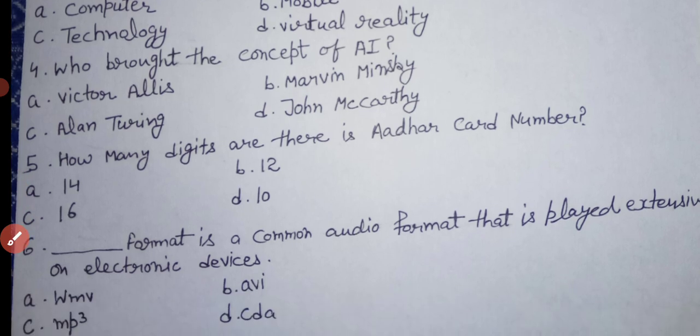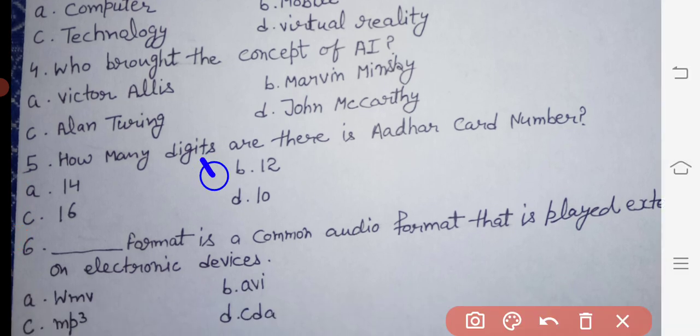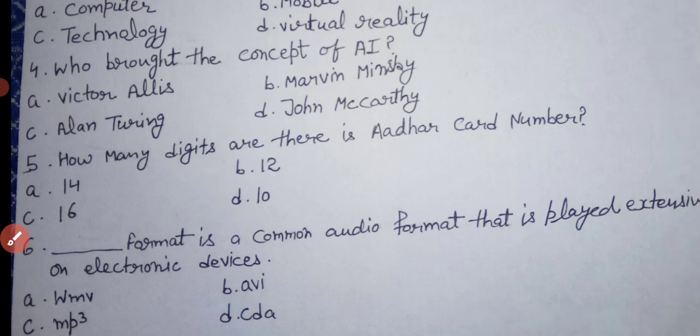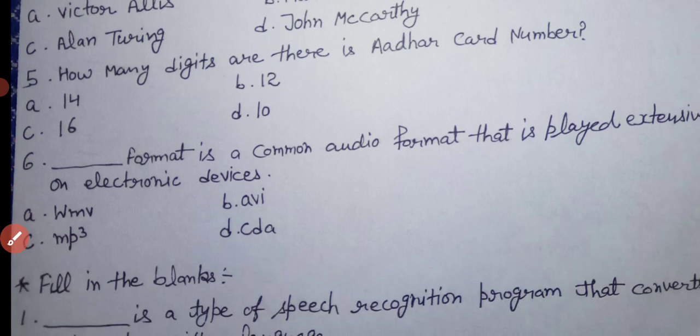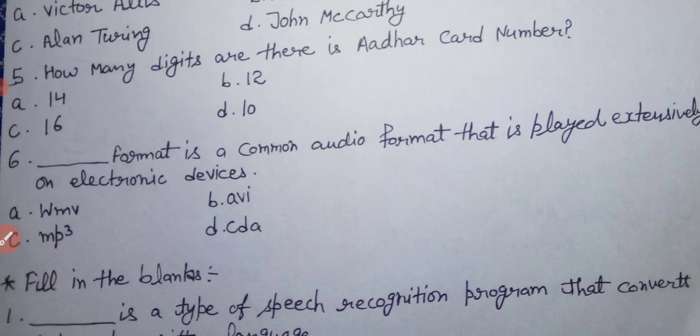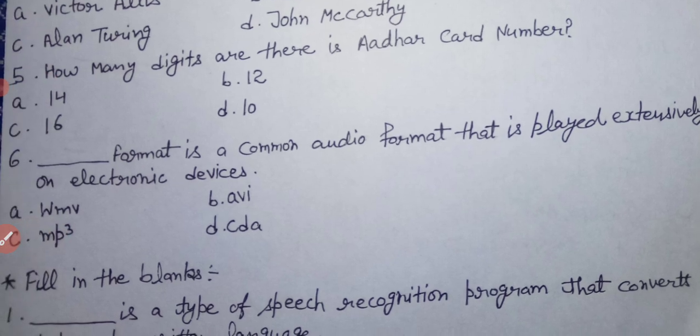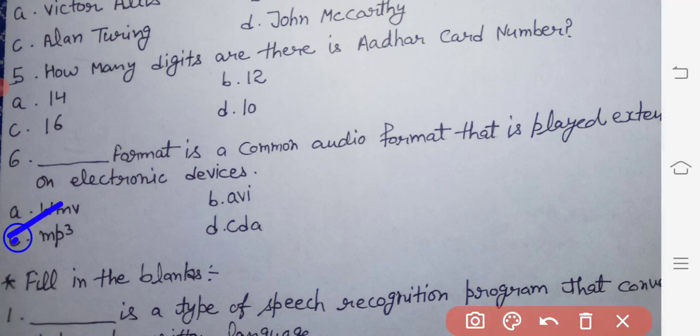Next question: how many digits are there in an Aadhaar number? The answer is option B — twelve. Sixth question: dash format is a common audio format that is played extensively on electronic devices. The answer is option C — MP3.